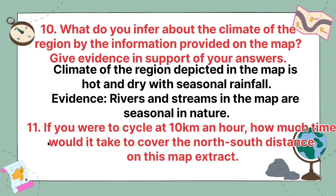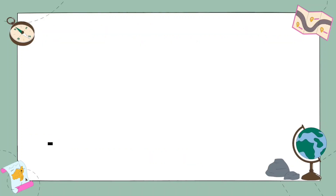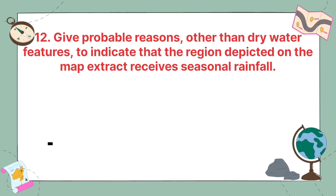If you were to cycle at 10 km per hour, how much time would it take to cover the north-south distance on this map extract? The north-south distance is 10 km because there are 10 grids, and each grid equals 1 km, with each grid measuring 2 cm on the map. So the scale is 2 cm equal to 1 km. Therefore 10 grids × 2 cm = 20 cm = 10 km. The answer is 1 hour.